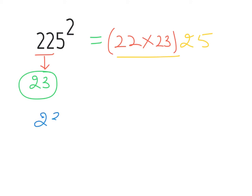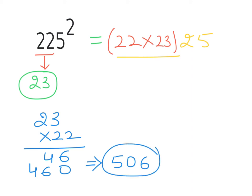So 23 times 22. 3 times 2 is 6 and 2 times 2 is 4. Now 0 at the base and then again 46. The sum of this number as we can see is 506. That's correct. Now we will put this 506 above in place of 22 times 23 and the value comes out to be 506 and at the end 25.